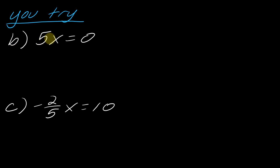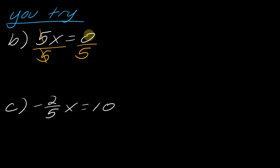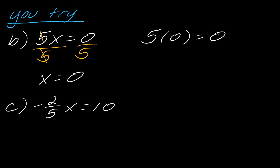For the next example, 5x equals 0. I divide both sides by 5. A common question is where does the 0 go — it's fine when 0 is on top. So 0 divided by 5 equals 0, and x equals 0. Confirm: 5 times 0 is just 0.